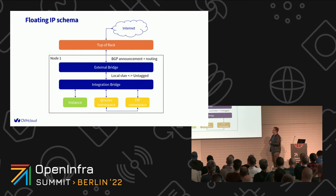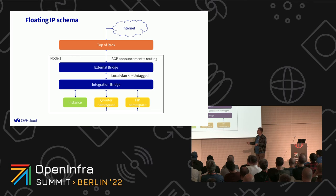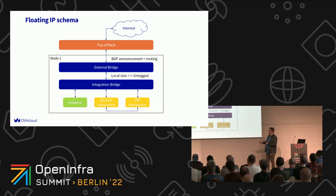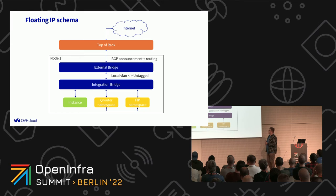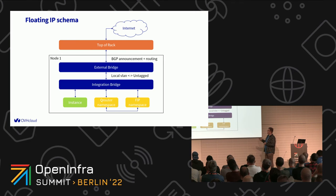Here's how our stack looks for floating IP. We have an instance, and from that instance we want traffic to go outside to the external world. From the instance to the integration bridge, we go to the Qrouter because it's on a private network. From the Qrouter we go to the floating namespace — this is the part that the L3 agent configures for us. There, the VRack agent configures routes and attaches the VLAN. Then the BGP agent does route announcement, allowing us to exit our rack and reach the internet.